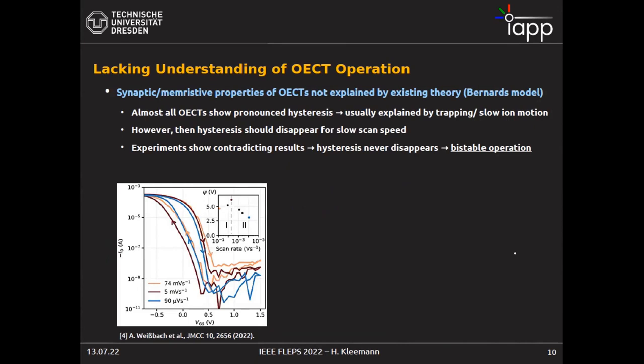We did a very simple experiment: we looked at the shape of the transfer curve depending on the sweep rate of the voltage. You would normally expect hysteresis caused by charging or trapping effects to disappear at slow scan rates — but most surprisingly, even sweeping at a few microvolts per second the hysteresis always remains. We can even wait for four hours and it always remains. So in fact it's a combination: there is hysteresis on the timescale of a few seconds, but also bistable operation in the system.